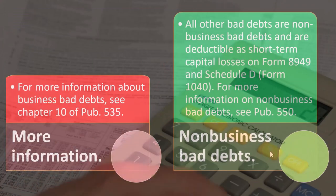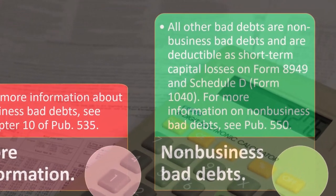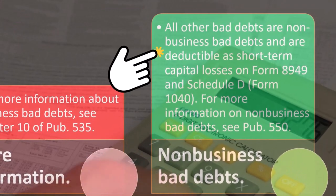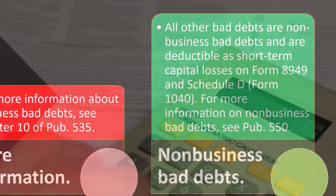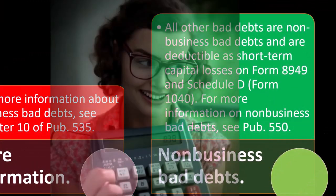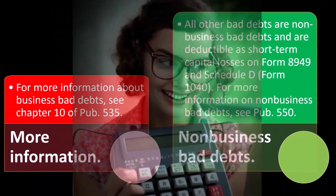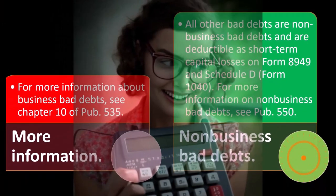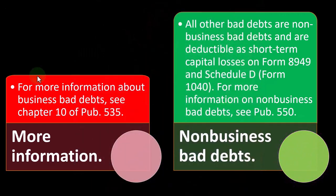For non-business bad debt, all other bad debts are deductible as short-term capital losses on Form 8949, Schedule D, Form 1040. You can look there for more detail, but we're focused here on the business bad debt.